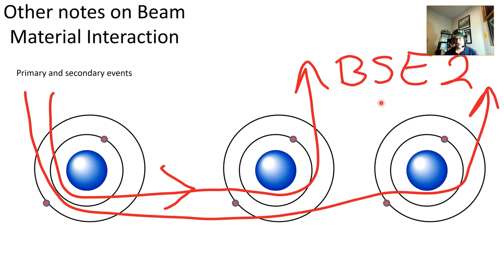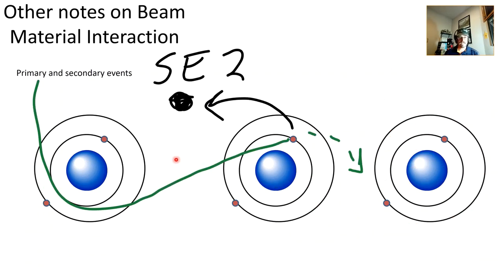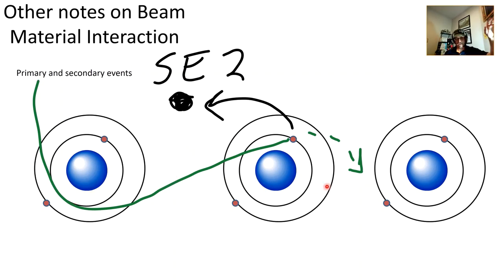Similarly for secondary electrons: an SE2 event occurs when an electron that could have been a backscattered electron enters a neighboring atom and this time does knock out an orbiting electron. That ejected orbiting electron becomes an SE2. We know this happens because of the edge effect — electrons traveling toward the edge get emitted from secondary surfaces and collected by the secondary detector.